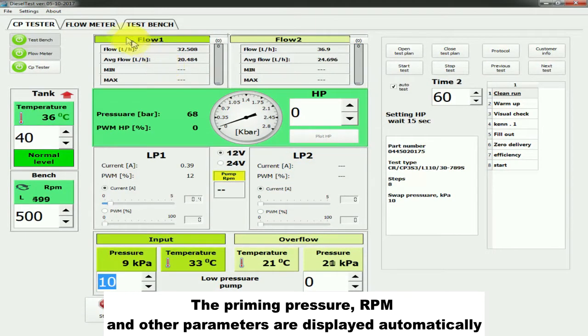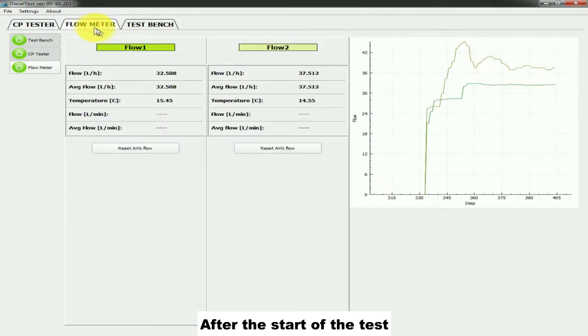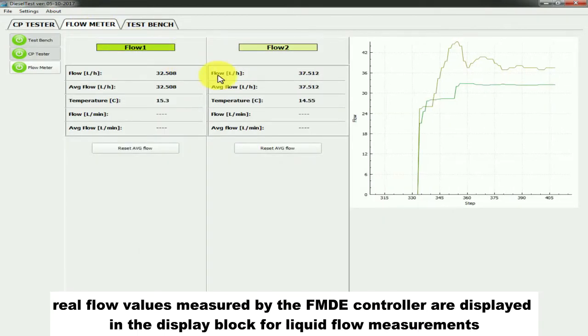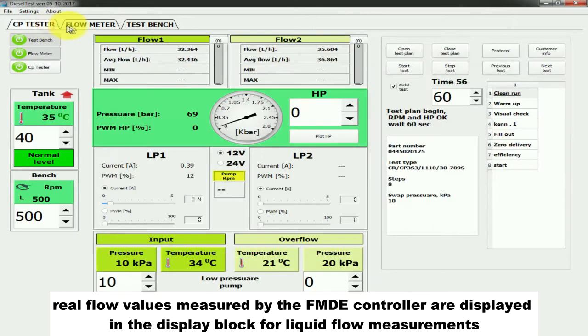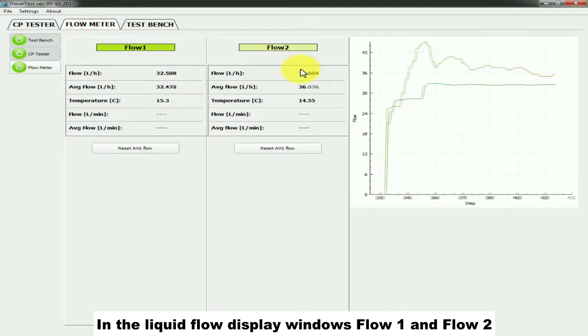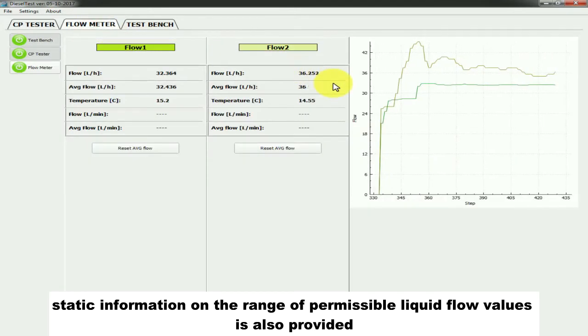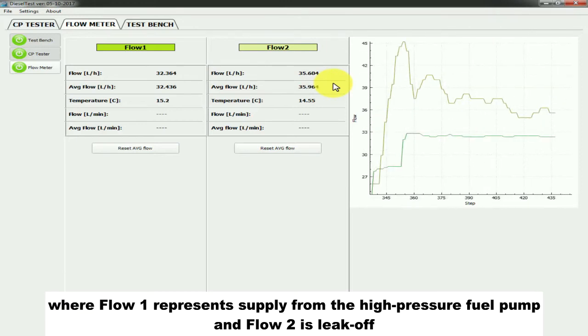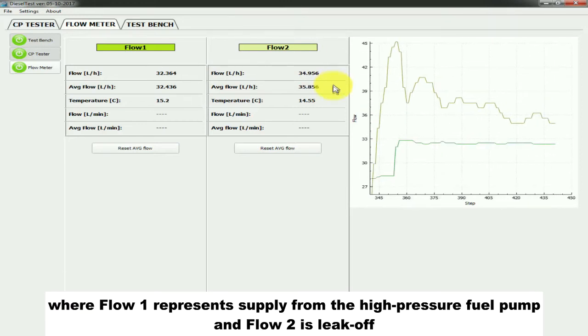After the start of the test, real flow values measured by the FMDE controller are displayed in the display block for liquid flow measurements. In the liquid flow display windows, flow 1 and flow 2, static information on the range of permissible liquid flow values is also provided, where flow 1 represents supply from the high-pressure fuel pump and flow 2 is leak off.